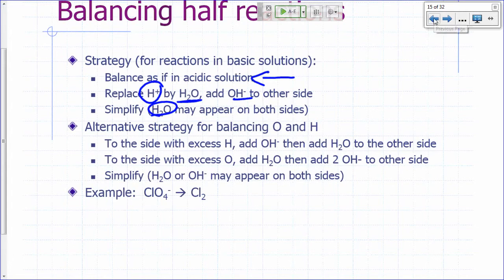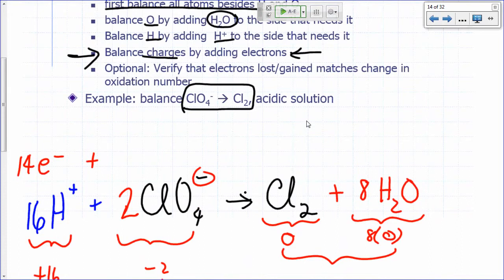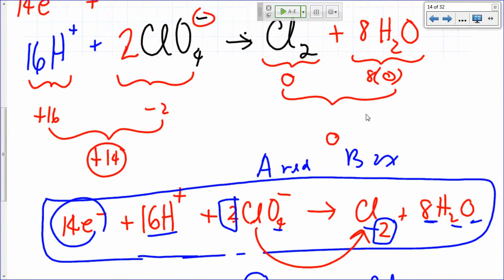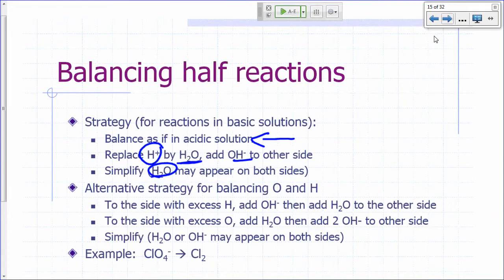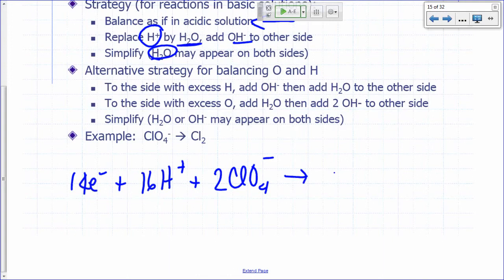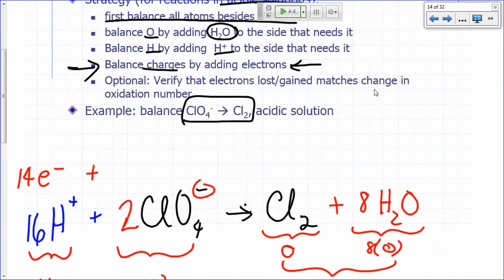Let's illustrate that with what we just had earlier. What was our balance equation? 16 and 2, 1 and 8. 14 electrons. 14 electrons plus 16 H+ plus 2 perchlorate gives you, how much? Cl2 plus 8 H2O. That's all we have, right? Let's just make sure, yeah, that's all we have.